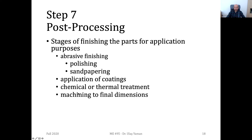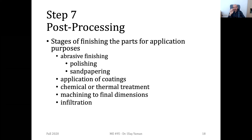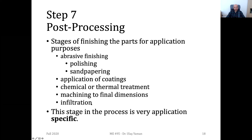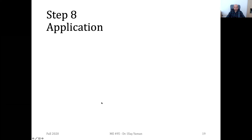Machining can also be used as a post-processing operation — not only to remove support structures, but also to adjust the final dimensions of 3D printed products. In some cases, if the part was fabricated using powders, you may have gaps or porosity between the powder particles. By doing infiltration, you can fill these gaps with a different material or powder, increasing the strength of your product. The types of post-processing applications are very specific to your end use.